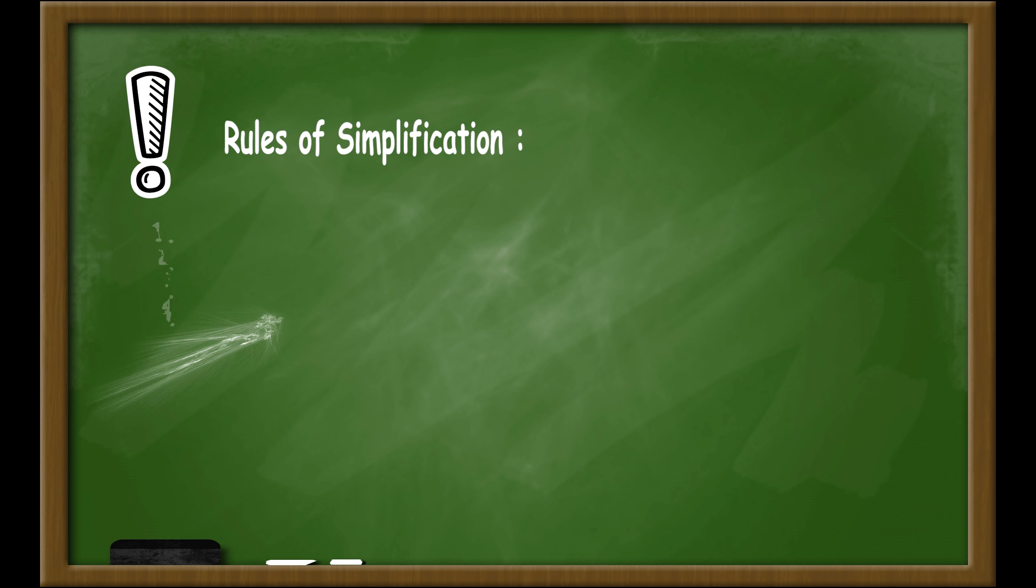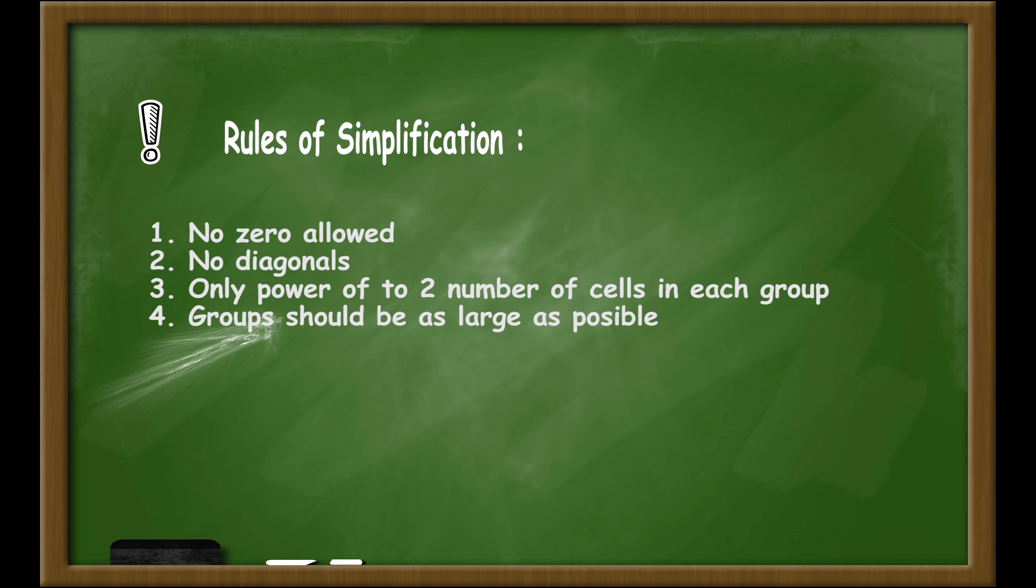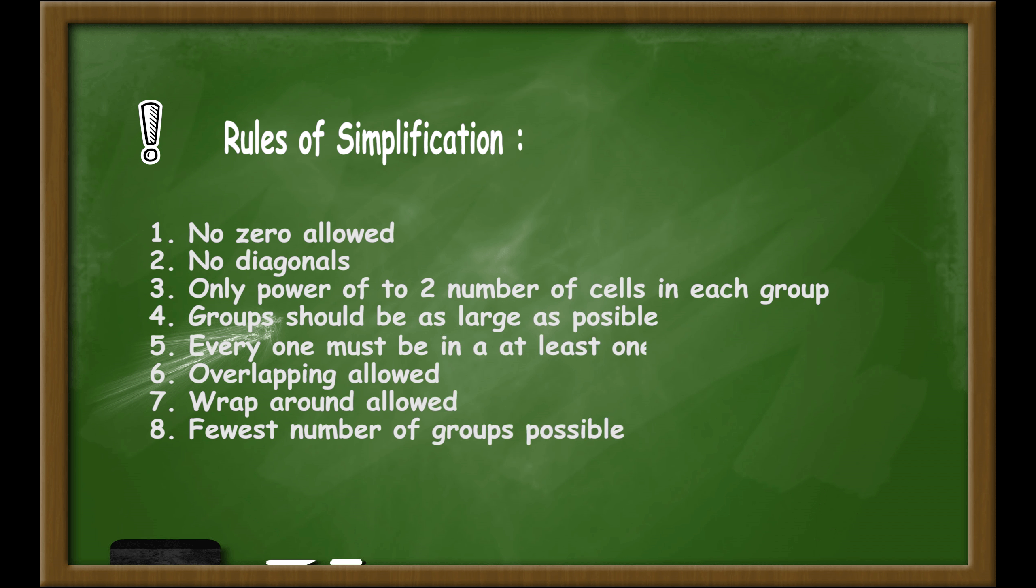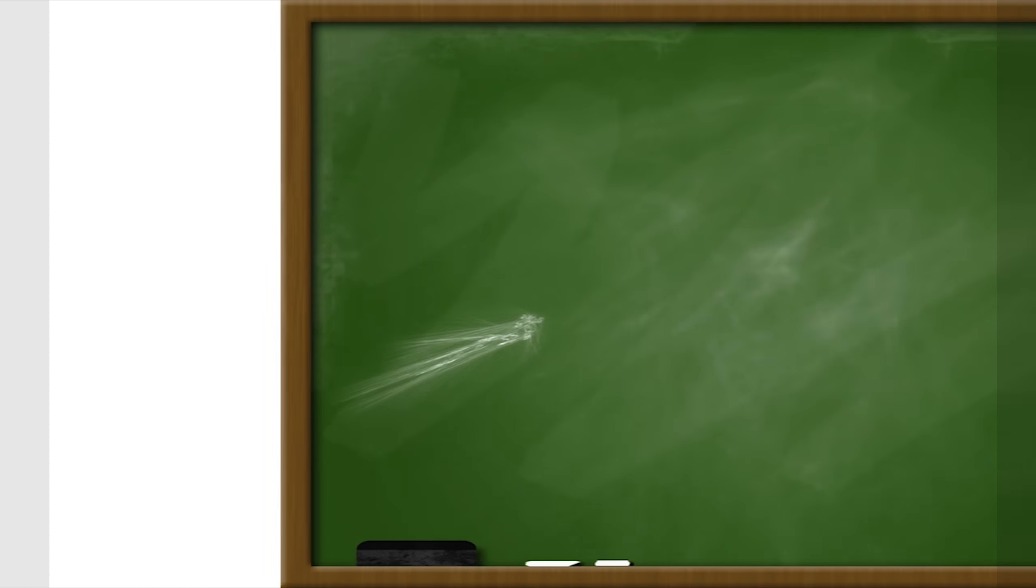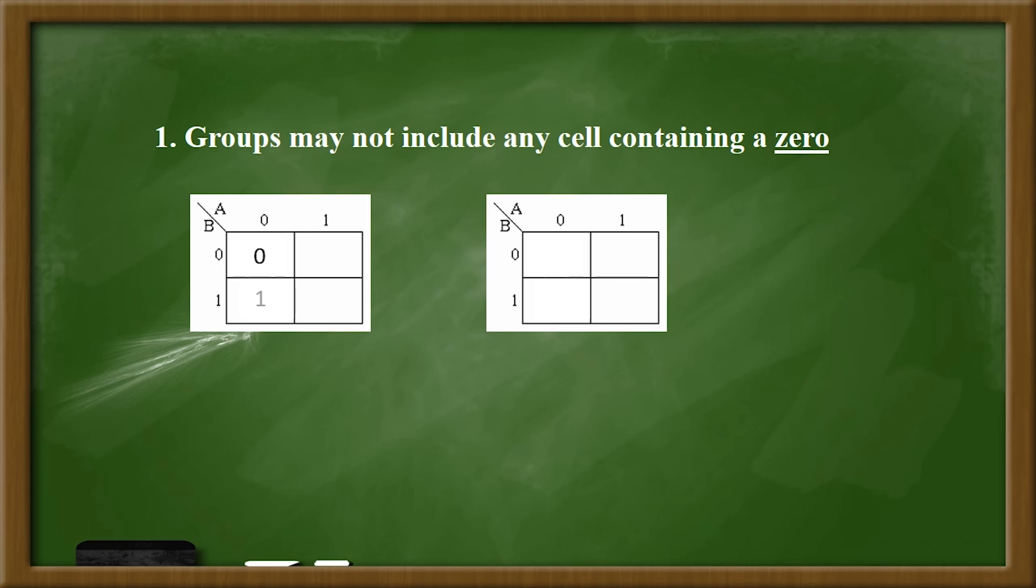There are rules of simplification using Karnaugh map: there is no zero allowed, there is no diagonal, only power of two number of cells in each group, groups should be as large as possible, and everyone must be in at least one group. Overlapping is allowed, wrap around is allowed, and fewest number of groups possible.